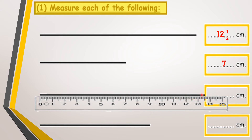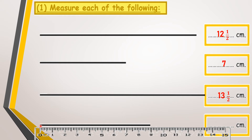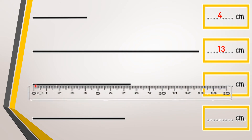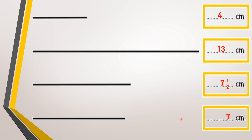Put your ruler starting from zero, not from one — always start from zero. Look at the end of the second line: it's at thirteen and a half centimeters. The next line starts at zero and ends at nine centimeters. The next one ends at four centimeters. Another line goes to 13 centimeters. One line ends between seven and eight — that's seven and a half centimeters. The last line ends at seven centimeters.